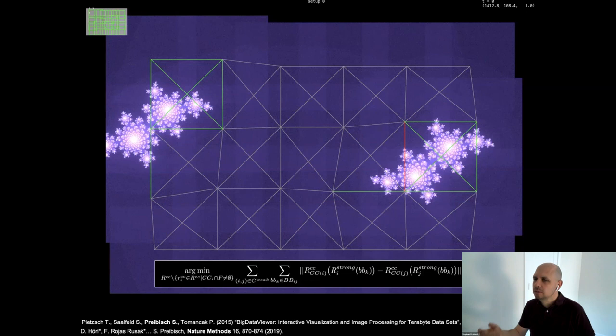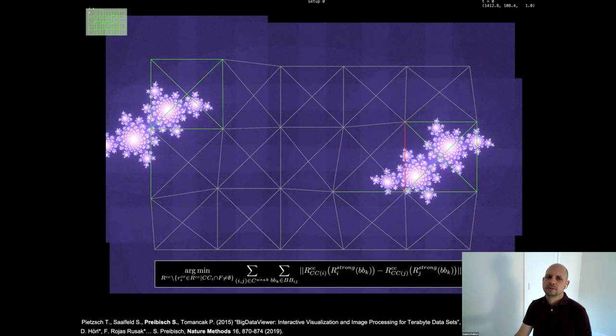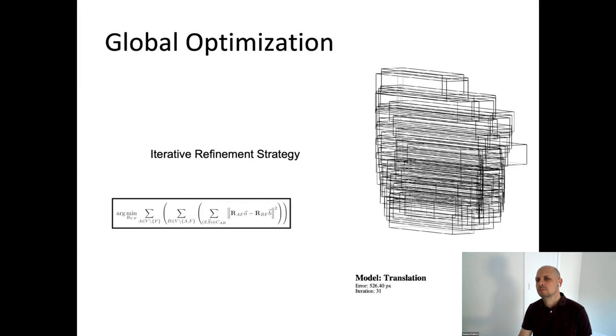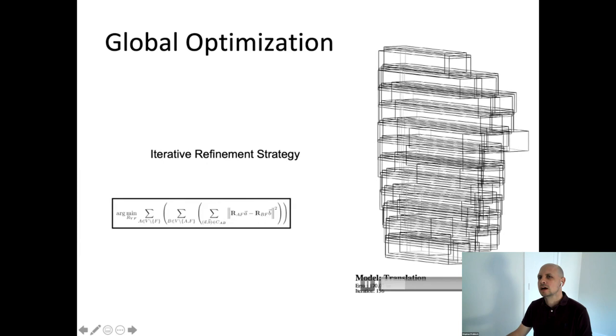The general stitching problem is illustrated here. You have several tiles that overlap. This is what the stage tells you how it is, that is how it actually turns out to be. What you need to do is compute pairwise overlaps between each of those tiles for each tile, and then you find a globally optimal solution that places them as good as possible relative to each other.